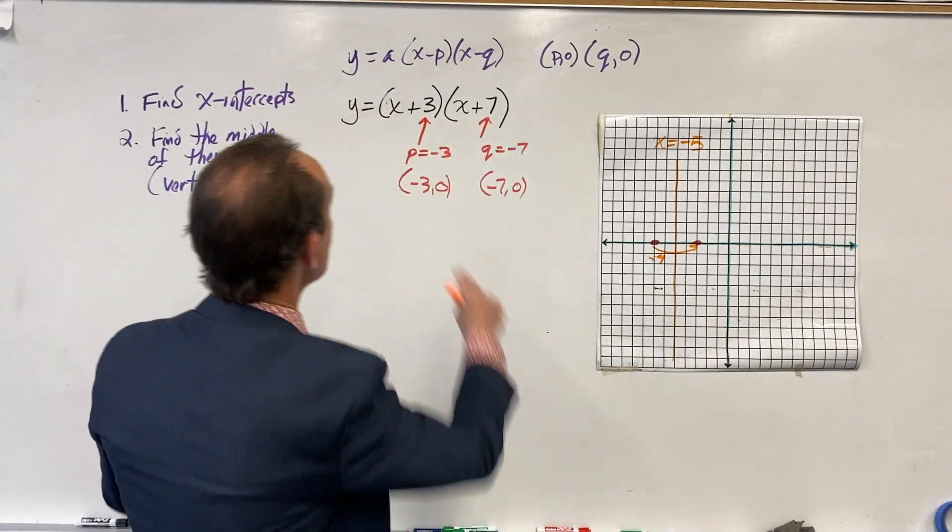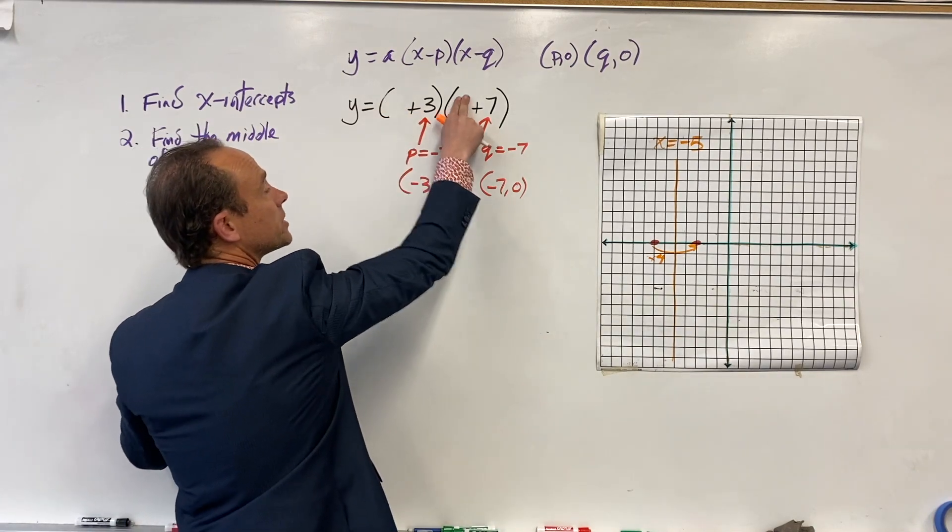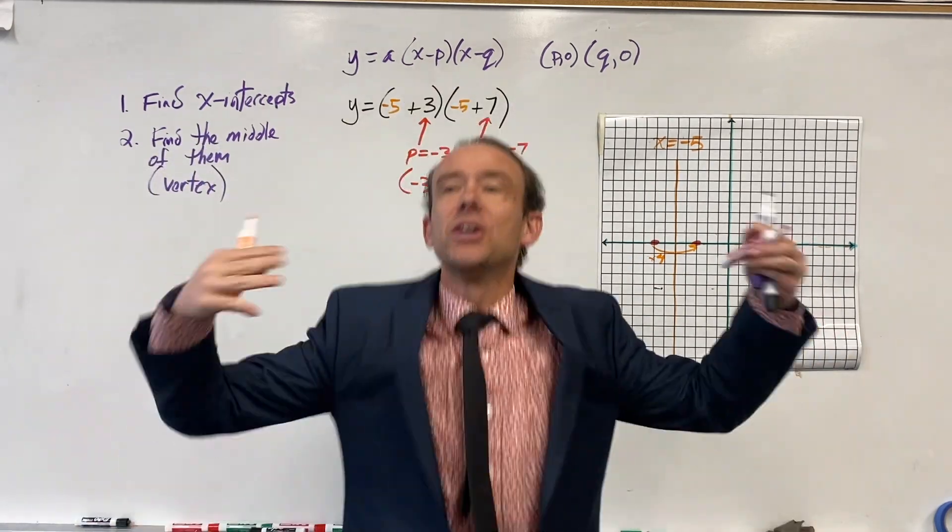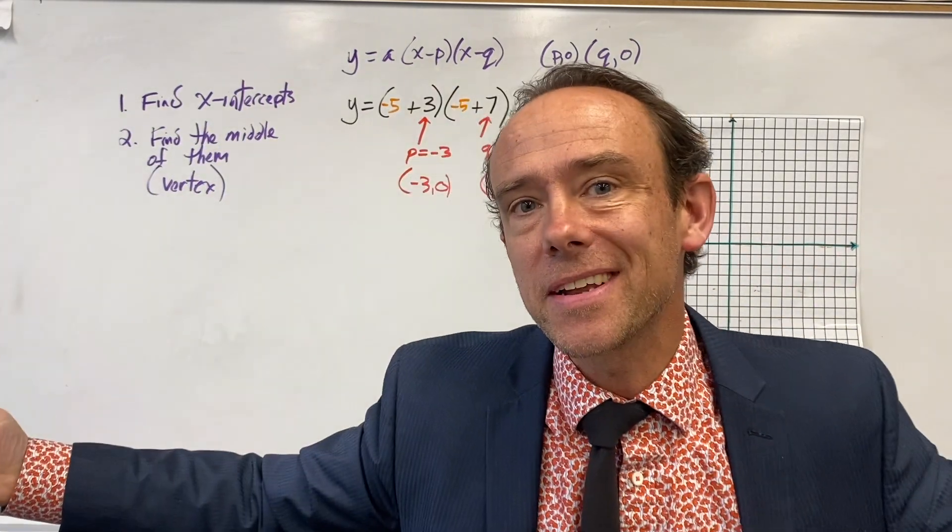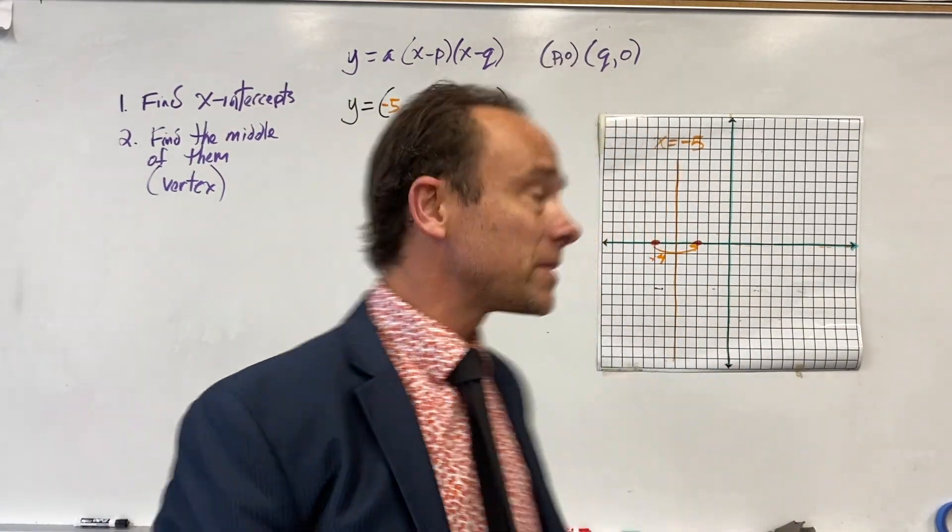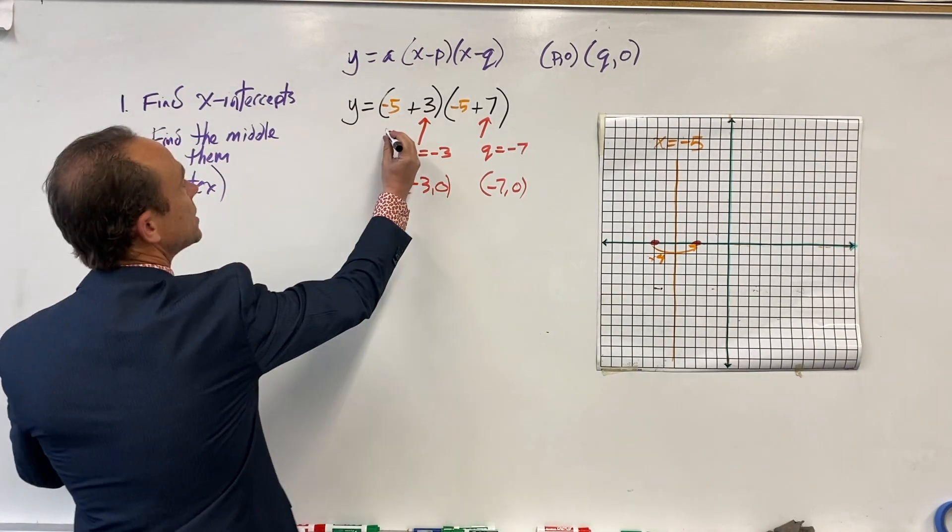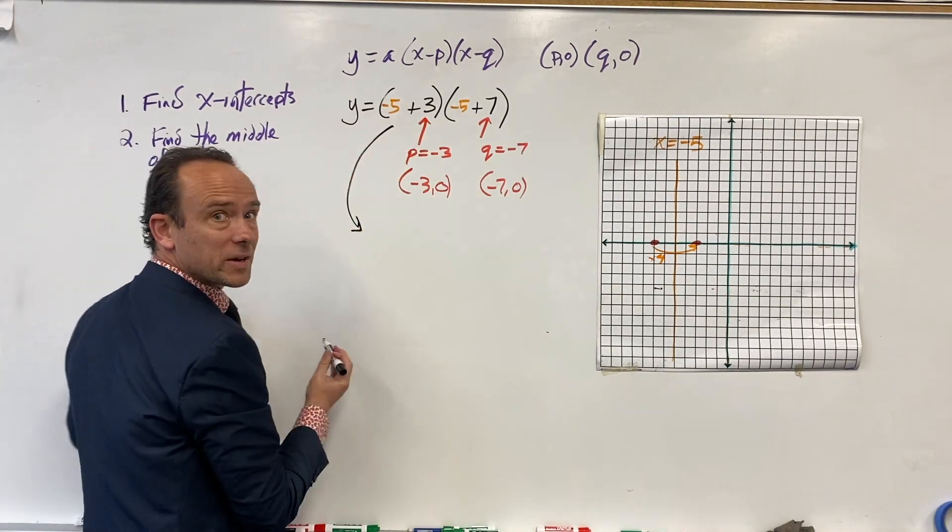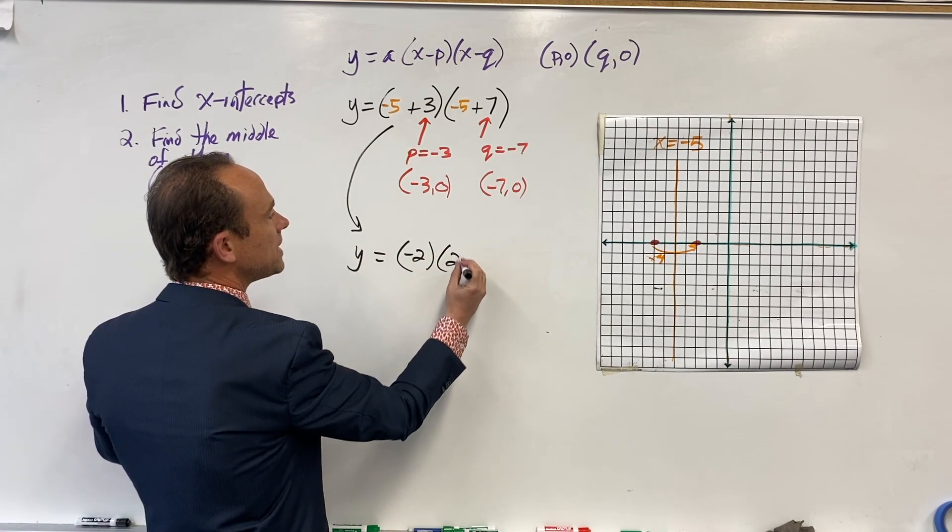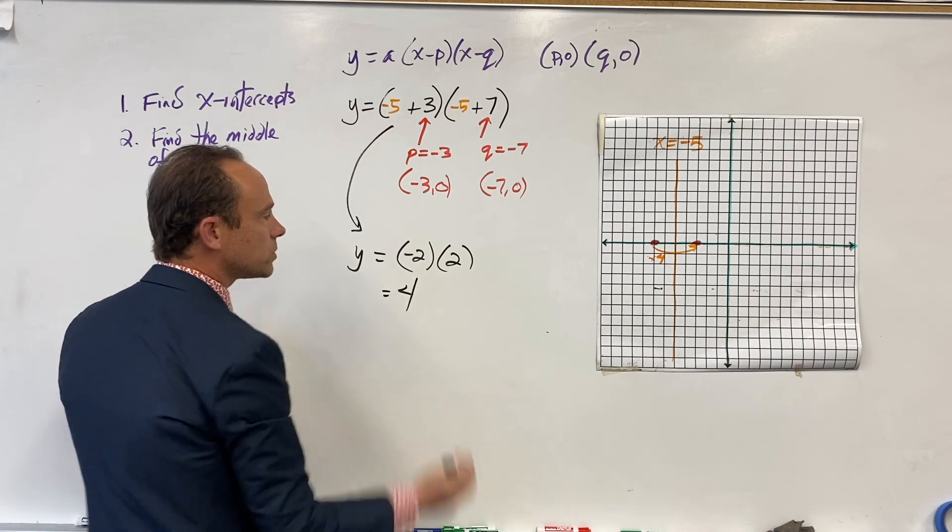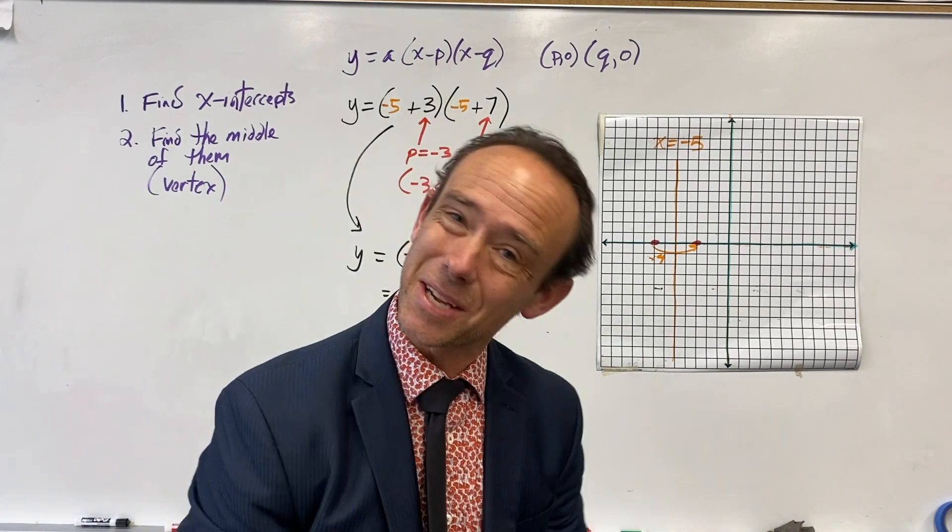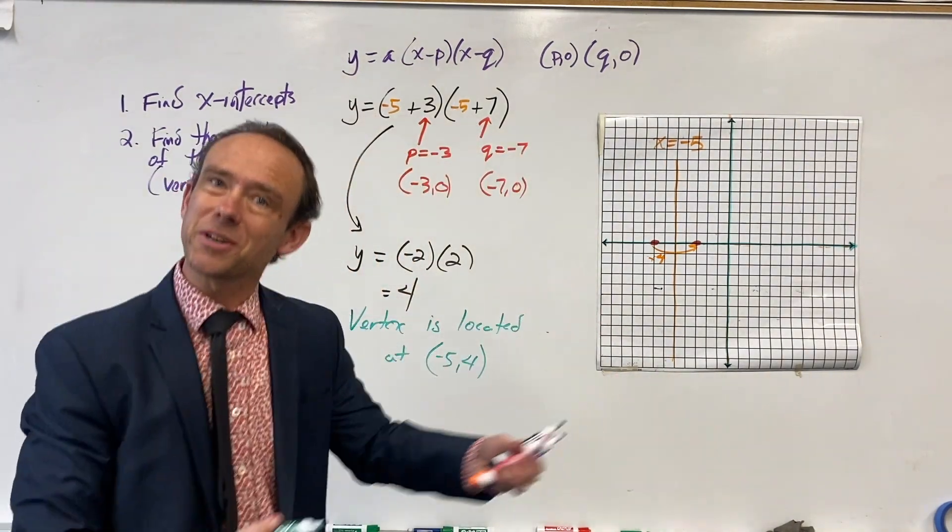We're going to take that value and plug it back into our equation: y = (x+3)(x+7), so y = (-5+3)(-5+7). A vertex has an x and a y coordinate, it's got two values. This is the x value, the axis of symmetry. Now we got to go find that y value.